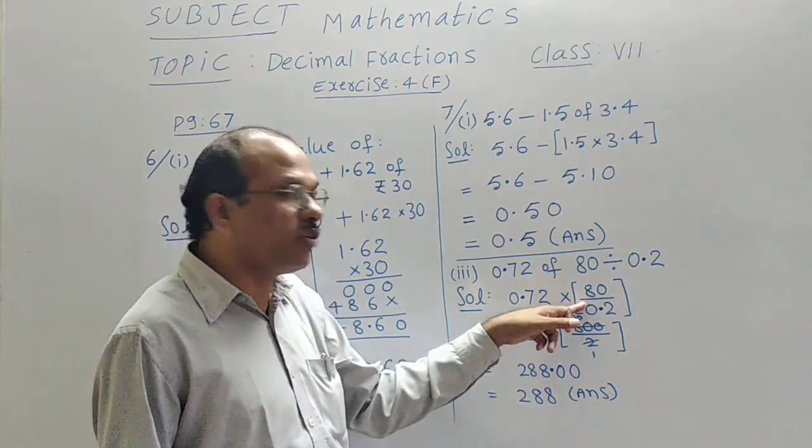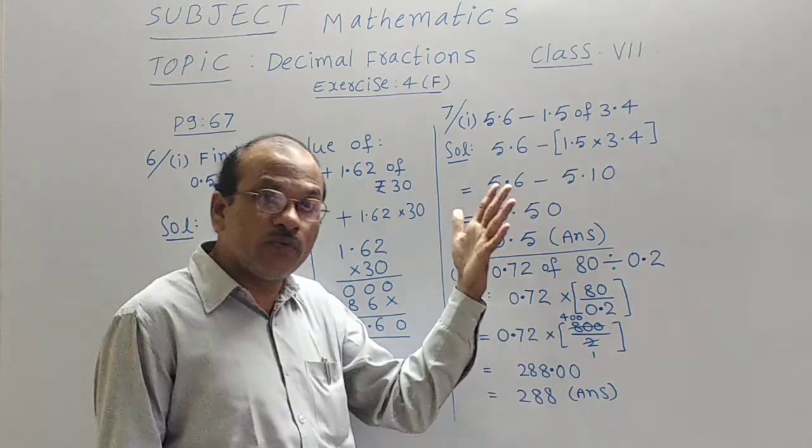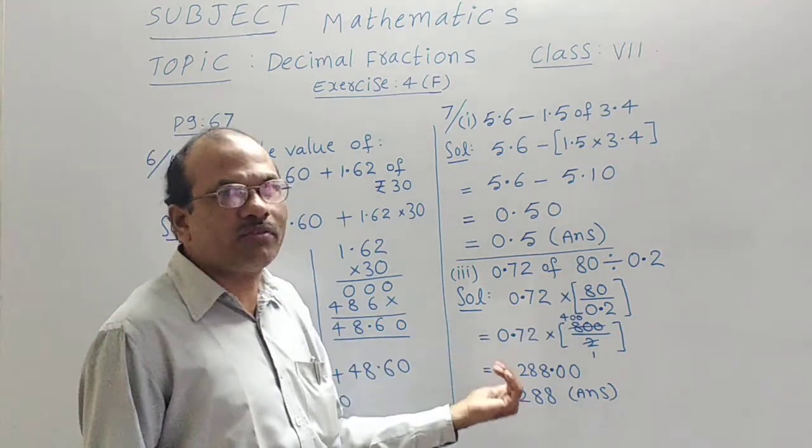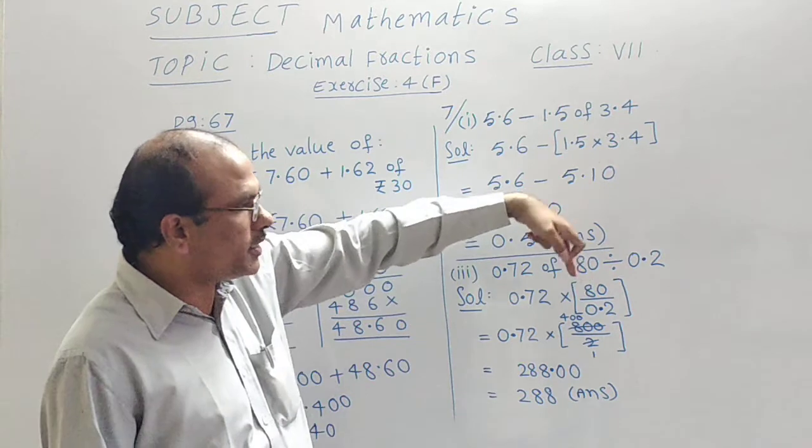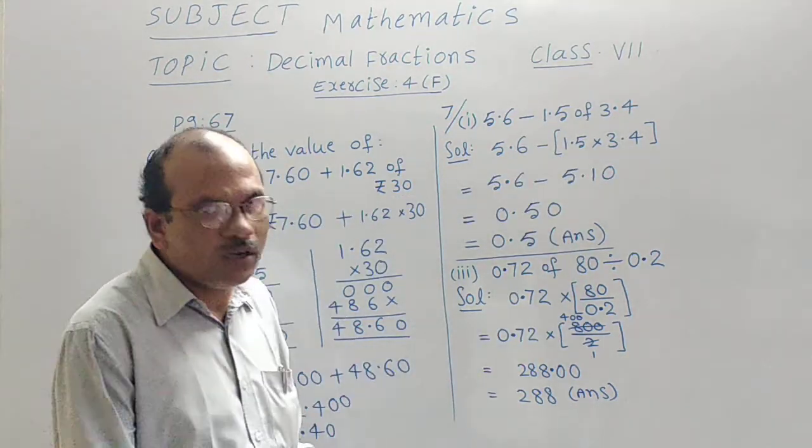0.72 into this 80 changed as 800 by 0.2 written as just 2. Because this 0 has no value. That point which is after 1 digit was removed and was written only 2. Just to remove that point which is after 1 digit, I have placed 0 in the numerator. So 80 written as 800 in the next step.